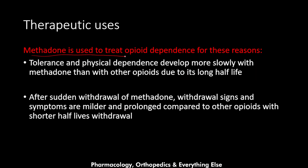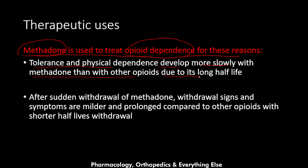Methadone is used to treat opioid dependence for several reasons. Tolerance and physical dependence develop more slowly with methadone than with other opioids due to its long half-life, so the patient doesn't become dependent on methadone as easily. After sudden withdrawal of methadone, withdrawal signs and symptoms are milder and more prolonged compared to other opioids with shorter half-lives. So when we replace the opioid of abuse with methadone and then taper it gradually, methadone does not produce as aggressive withdrawal symptoms.